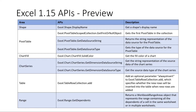One of the themes of Excel 1.15 is this idea of bi-directional discovery. We're adding more APIs to enable your add-ins to discover the source of data. In pivot table, for example, you can get where the data generating that pivot table is coming from, and what type — whether it's a range or table or what have you.